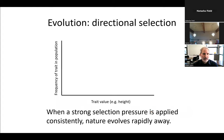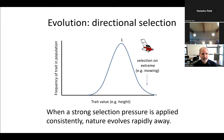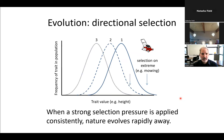Or you can have discontinuous variation where you've got two contrasting categorical types. Here we've got two different seed types of beggar tick — that long skinny one and that short thick one are these two morphs of the seed: discontinuous variation. When a strong selection pressure is applied consistently, nature evolves rapidly away.